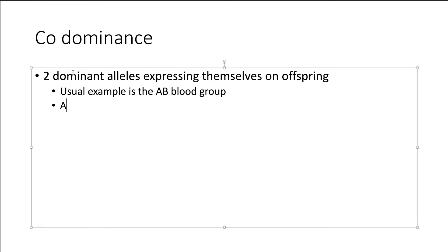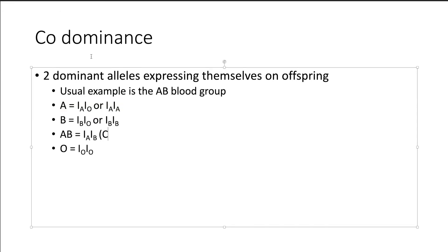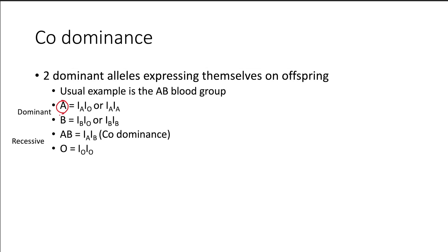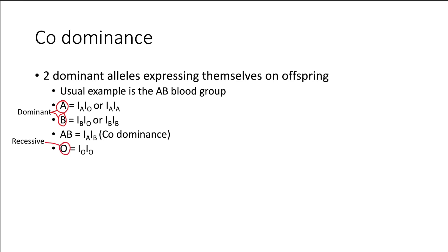A common example is blood groups in humans, where there are multiple alleles encoding for blood group. We have A, B, AB, and O. The allele for A encodes I^A and B encodes I^B. For blood group AB — where co-dominance comes into play — the genotype is I^A and I^B. For blood group O, it is homozygous recessive: I^O and I^O. Blood groups A and B can also be I^A I^O and I^B I^O respectively.